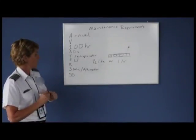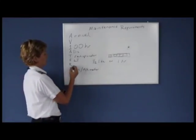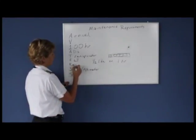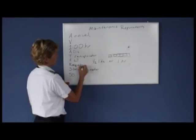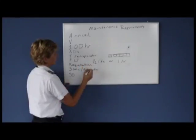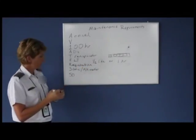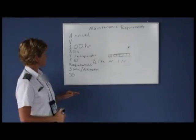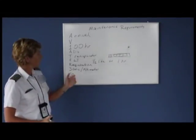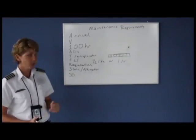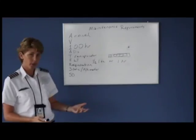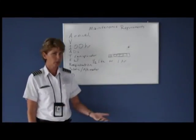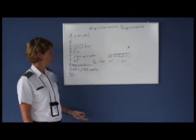The R stands for registration. Registration is due every three years — this is a relatively new rule. It used to be that once you registered your airplane you didn't have to worry about it again until you sold it or it was destroyed, but now it's due every three years.